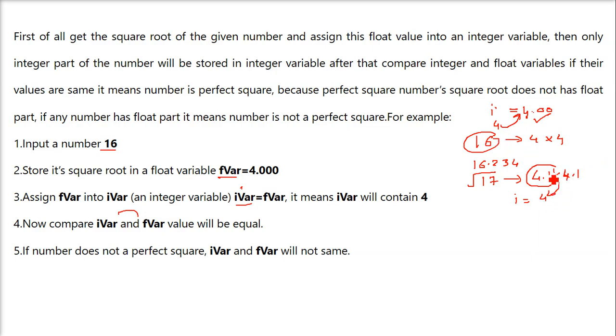But if this 4 and 4.1 when we compare, they are not equal. That is, 17 is not a perfect square.